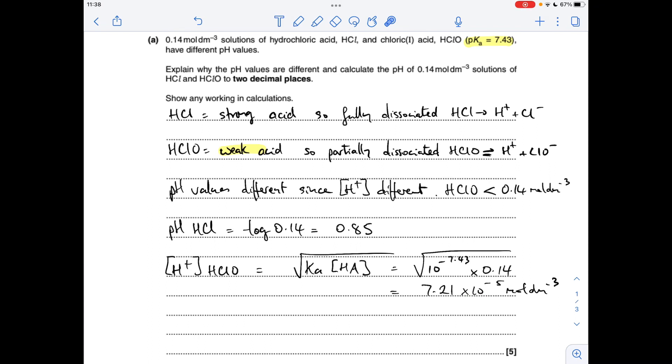So you can see how much different the H plus concentration is for the weak acid compared to the strong HCl. So when you minus log that H plus concentration, you get 4.14 for the pH of HClO to two decimal places.